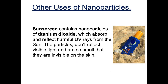Sunscreen is another example where nanoparticles are being used. Nanotitanium dioxide is now used in sunscreen because it blocks out the harmful UV rays, and the particles are so tiny that they don't reflect visible light, meaning the sunscreen cannot be seen on the skin — it's invisible. That's just another application of where nanoparticles are being used in everyday life.